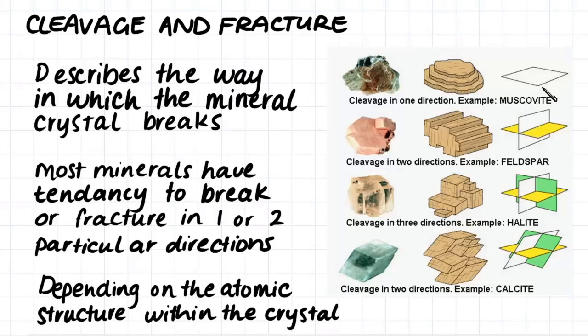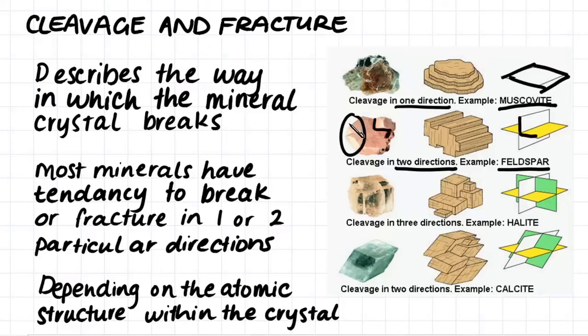Here we can see there are a few different types of cleavage or fracture. Muscovite mica will break off in only one direction and therefore will create sheets or plates of mineral when it breaks off. Feldspar will break in two separate directions, one, two directions, and therefore it will have a third direction which will break in any sort of way.